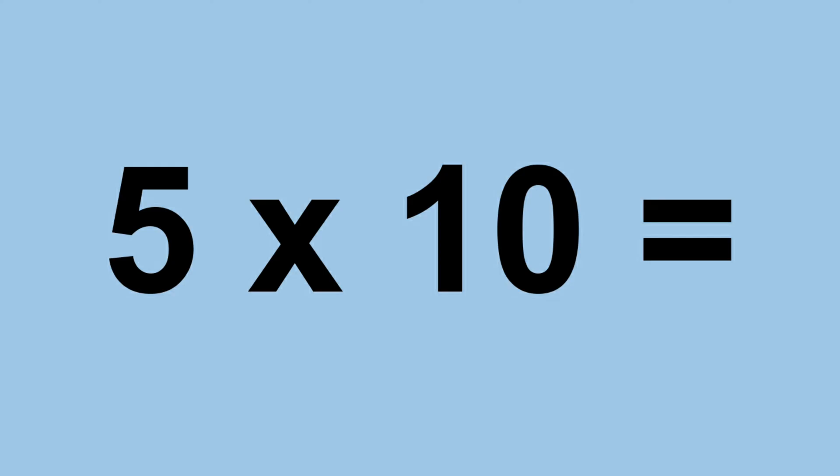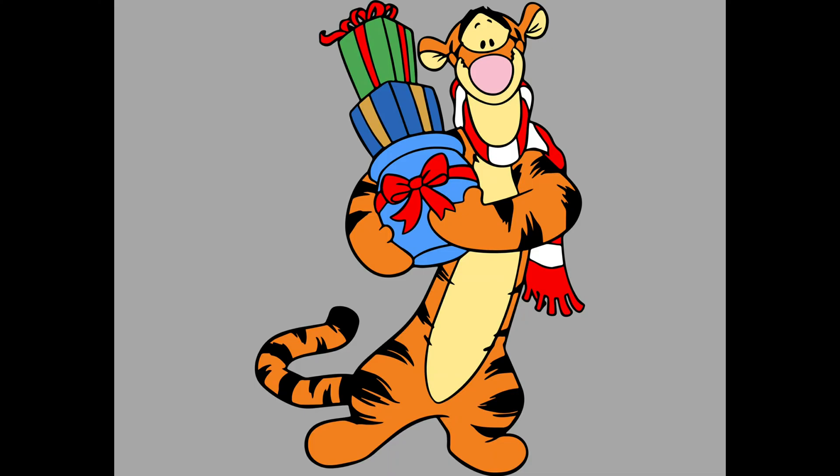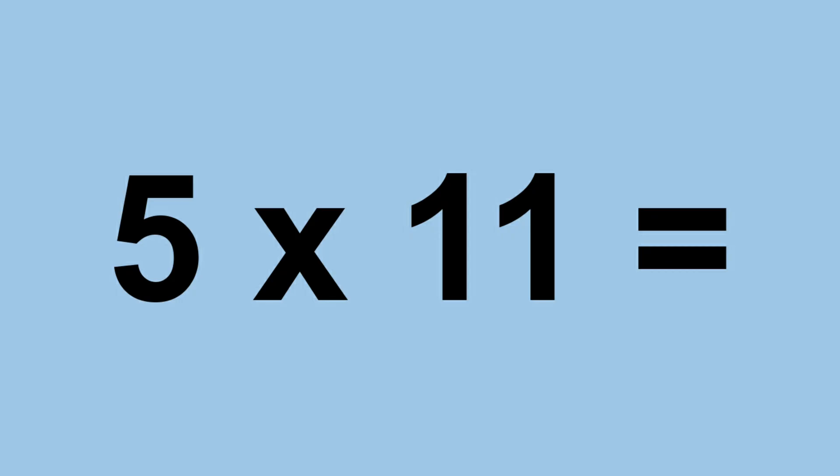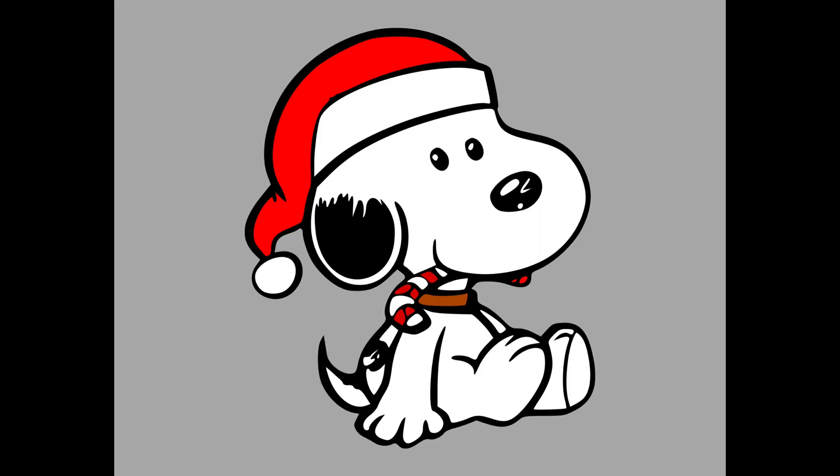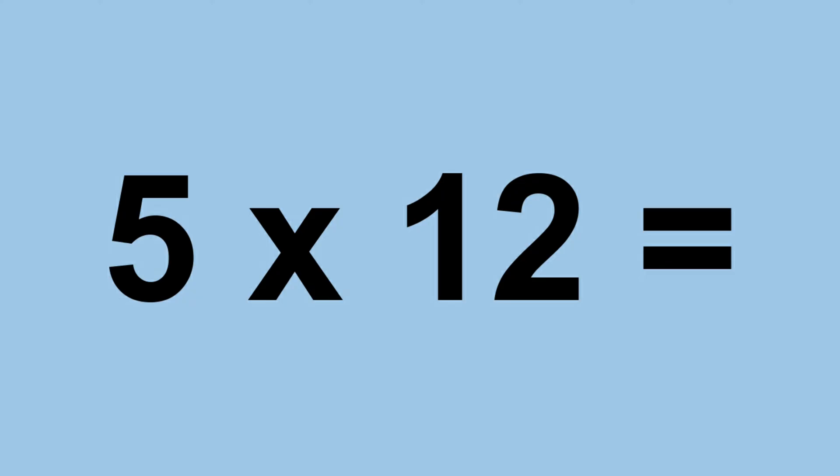Five times ten equals fifty. Five times eleven equals fifty-five. Five times twelve equals sixty.